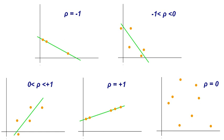Inferential statistics is used to make inferences about an unknown population by estimation and/or hypothesis testing. It is desirable to obtain parameters to describe the population of interest, but since the data is limited, it is necessary to make use of a representative sample in order to estimate them. With that, it is possible to test previously defined hypotheses and apply the conclusions to the entire population. The standard error of the mean is a measure of variability that is crucial to making inferences.